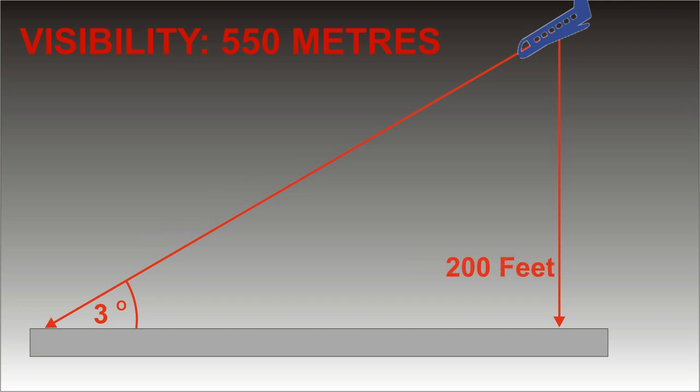Now, if we bring the vertical height down to 200 feet, which is our decision height, the passengers will have a good view of the ground. This is equivalent to 61 meters, which is more than enough to see the ground.